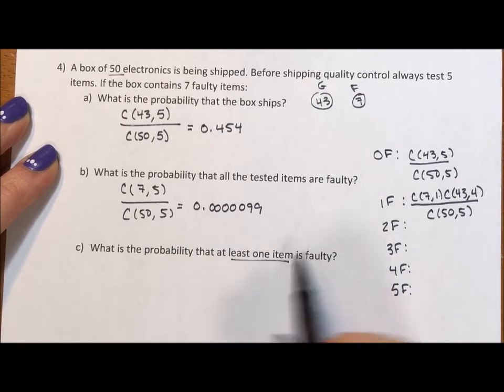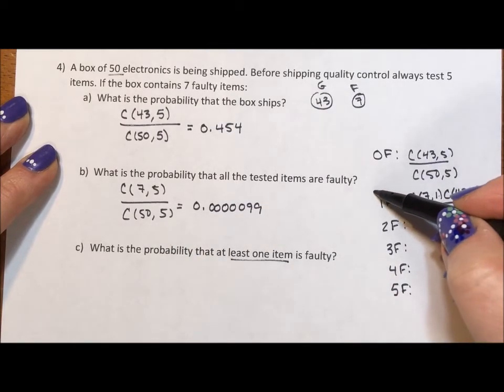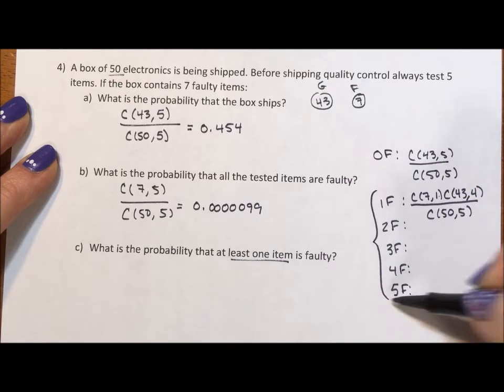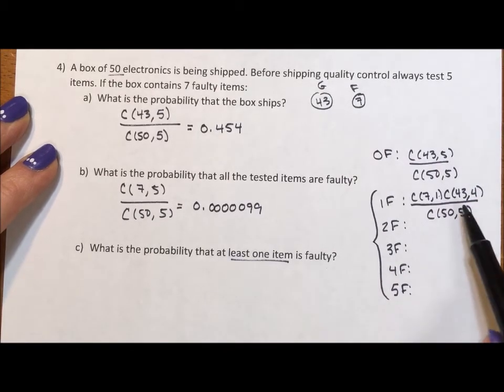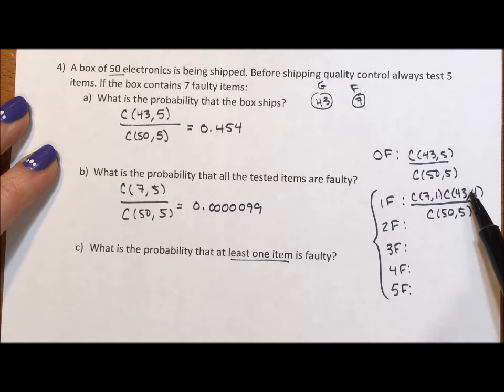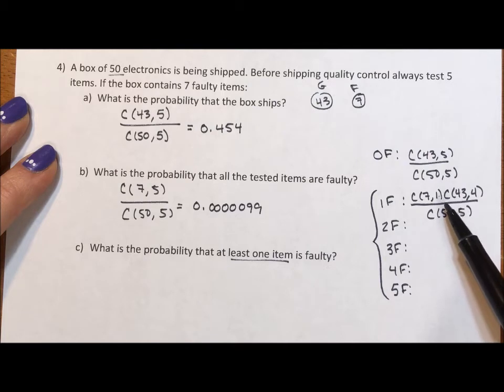If we want at least one item, that means we're adding these five categories. Honestly, if this is how I write 1 faulty and I have to add all 5 together, that seems very long, kind of tedious, tiresome.